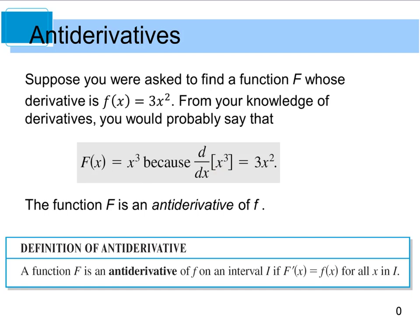The function F is what we call an antiderivative of f. The actual definition says: a function F is an antiderivative of f on an interval I if F′(x) = f(x) for all x. In other words, if I take the derivative of F and I get f, then F (capital letter) is the antiderivative.